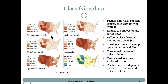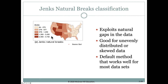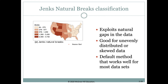Let's take a look at some of these methods. A very popular one is called the Jenks Natural Break. For all 50 states it builds a histogram showing how many values fall into each category, then looks for natural breaks in that histogram to decide how to divide the data into five different categories. This is good for unevenly distributed or skewed data and is often the default method used.